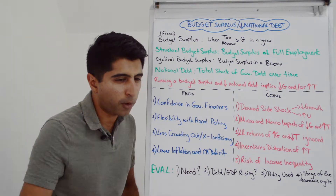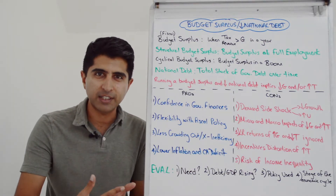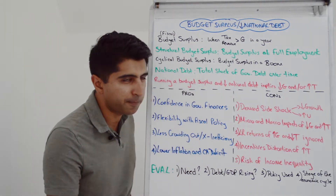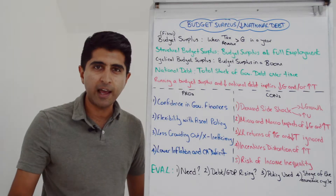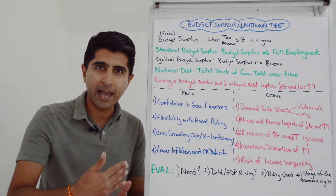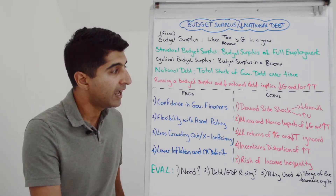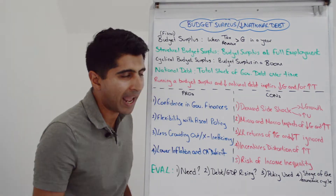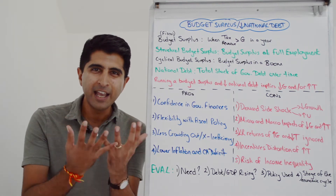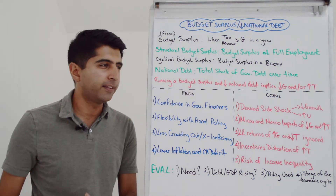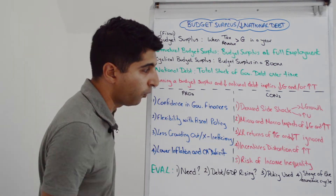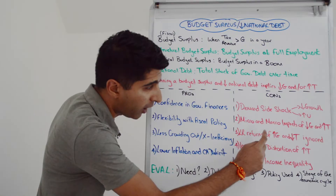These policies can also harm productivity and competitiveness. Government spending on education and health has big links to productivity and competitiveness. Even raising taxes like income tax and corporation tax can harm competitiveness and productivity.